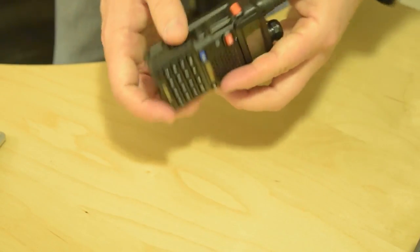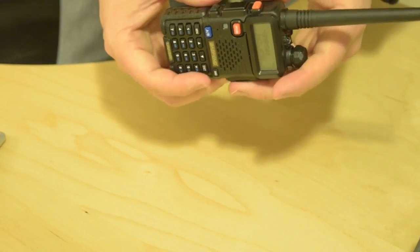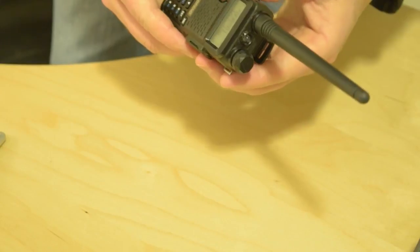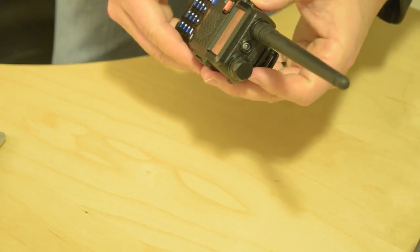Okay. The push and talk button is on the left side of the radio. It also has an alarm feature on it. You have to hold it down.